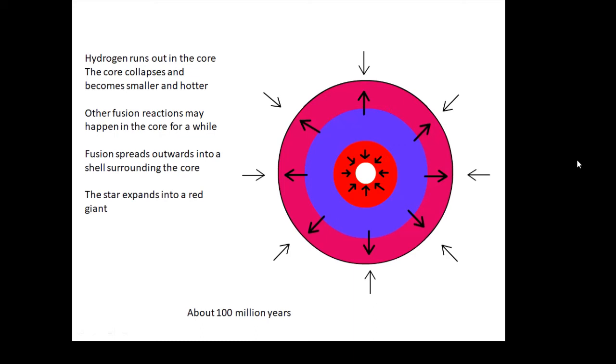We'll all be dead by then anyway because the Sun has got hotter and hotter and hotter and the Earth will be well frazzled by then. But anyway, it'll stay a red giant for about 100 million years.